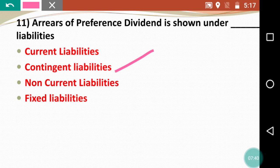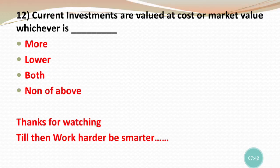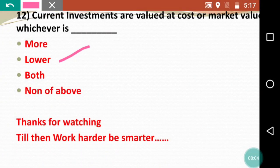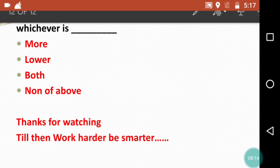Last question: Current investments are valued at cost or market price, whichever is dash. Options are more, lower, both, or none of the above. The answer is lower — current investments are valued at cost or market price, whichever is lower. This is similar to how closing stock is valued at cost or market price, whichever is lower.